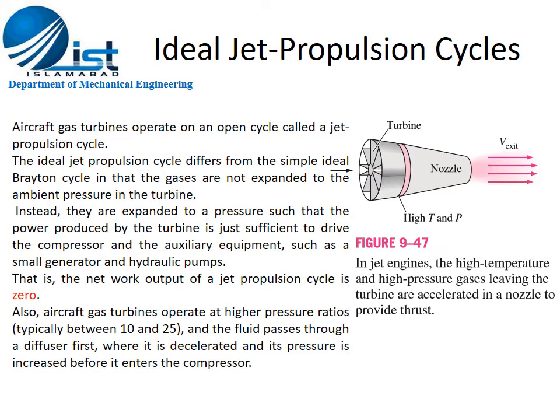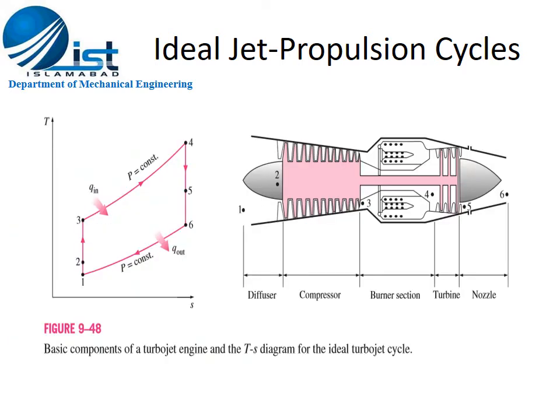Now we will explain the schematic as well as the T-S diagram of an ideal turbojet engine. The jet propulsion engine consists of a diffuser, a compressor, a burner section, a turbine, and a nozzle. The diffuser and nozzle are extra components added compared to the stationary gas turbine power plant. Focusing on the T-S diagram of the ideal jet propulsion cycle: from point 1 to 2 is the diffusion process.